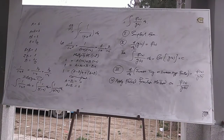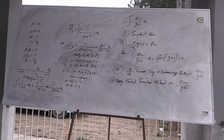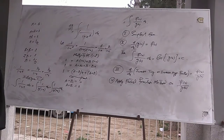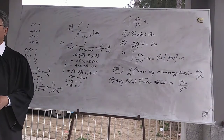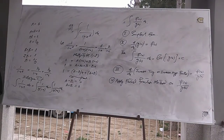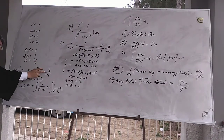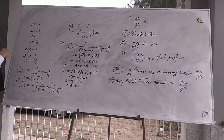So 1 divided by 1 minus x squared is not the original integrable form. The original functions are the two partial fractions, which we calculate by applying the partial fraction method — that is, the back process for finding the original functions, such that their sum equals the given function.